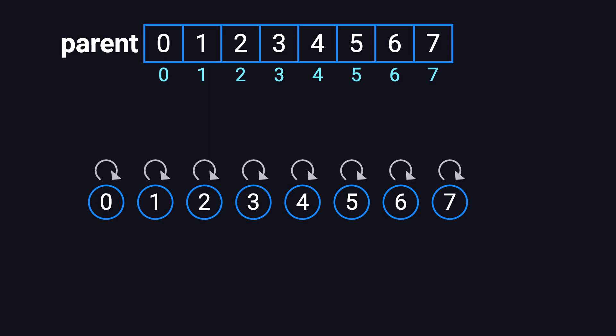Next, let's demonstrate the Union operation, merging two groups together. First, we perform Union(0, 1). This means we're merging the groups that contain 0 and 1. Let's say we choose 0 to be the new root. To do that, we set parent[1] equals 0. Now, nodes 0 and 1 are in the same group. They're part of the same tree.